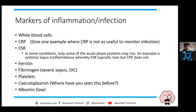ESR is another marker we use, especially in rheumatology and giant cell arteritis. Sometimes ESR is raised but CRP isn't. The classic example is lupus, where ESR is raised and CRP isn't, because ESR is more a marker of inflammation rather than infection.